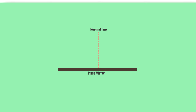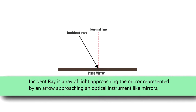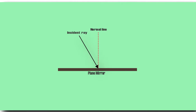Draw an incident light ray striking the mirror. The incident ray is a ray of light approaching the mirror, represented by an arrow approaching an object or any surface. Then draw the reflected ray such that it forms an angle with the normal line which is equal to the angle of incidence.